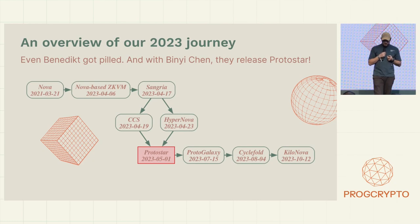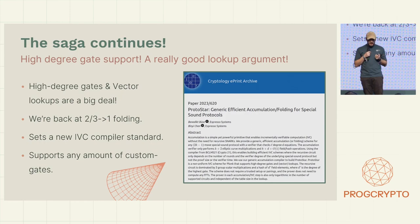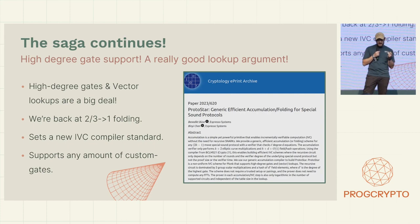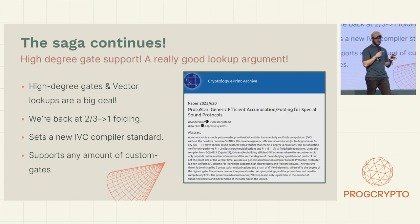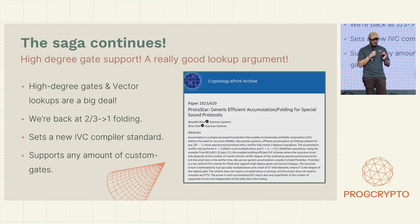Not so much later, we got Benedict Bünz involved, and together with Binyi Chen they came up with Protostar. All of a sudden we have high degree gates, vector commitments — sadly only two-to-one or three-to-one folding, because otherwise the whole thing blows up — but it was definitely, definitely much better on the lookup side. The support for high degree gates can also pay off for other counterparts, or you could rewrite circuits in a way that makes it good enough.